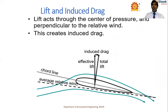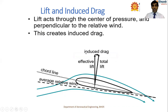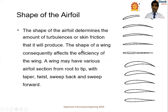Lift acts through the center of pressure and perpendicular to the relative wind. With the airfoil at an angle of attack, the flow generates both effective lift and induced drag. The total lift and induced drag are both generated over the airfoil.